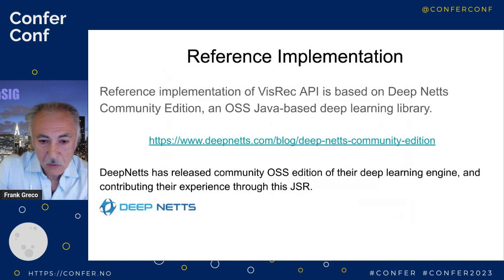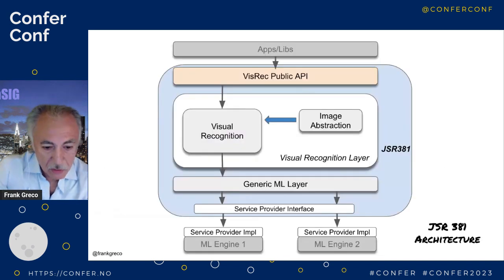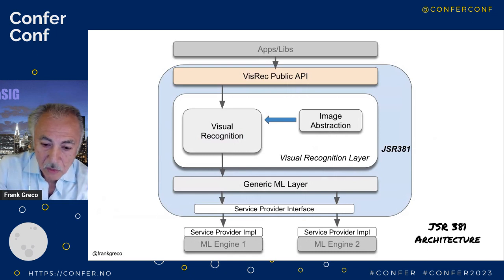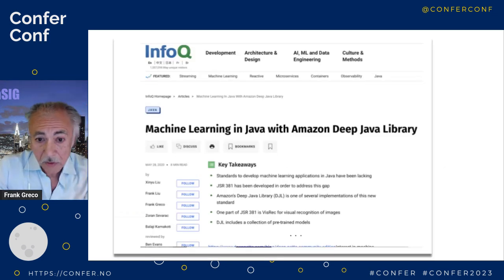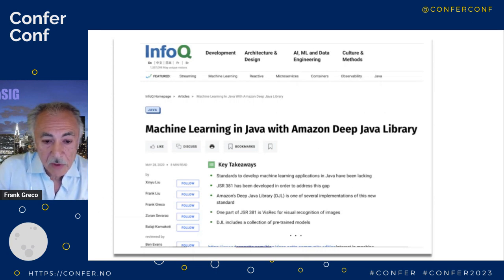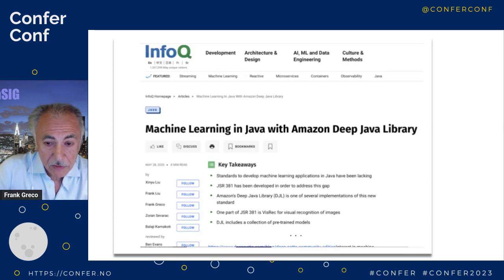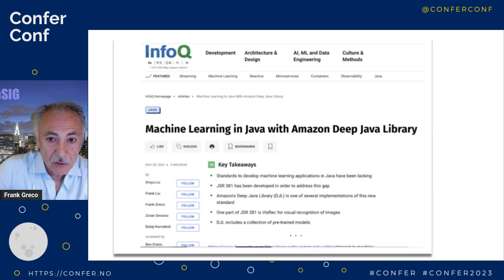Here's our architecture. The public API — the little orange-brownish thing at the top — is the API we created. All the rest is our internal playground. Like all JSRs, it's an API, and we sit on top of service engines at the bottom. One of the engines is DeepNets — Zoran's community edition of his machine learning engine. Another is Amazon, another is TensorFlow. Amazon implemented our API using their DJL — their Deep Java Library. When the Amazon team implemented on top of our API, we knew we were successful.